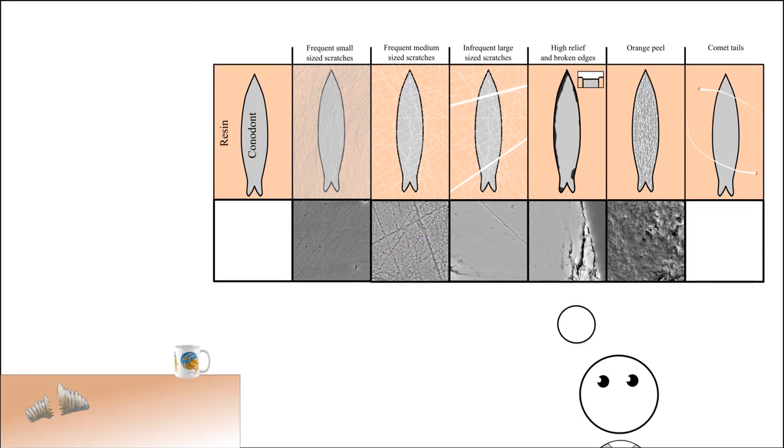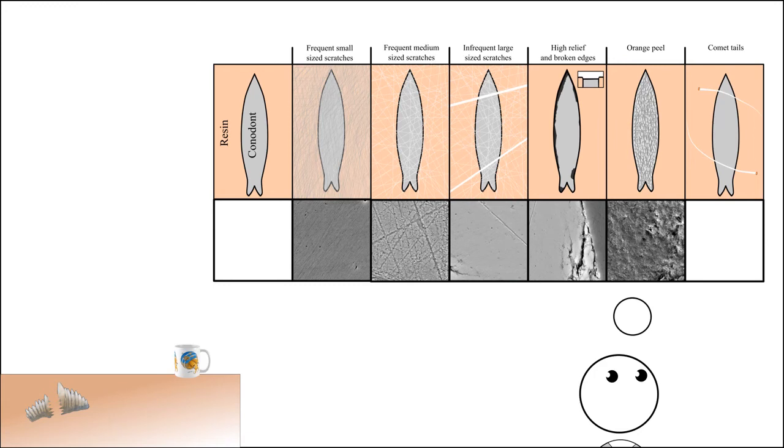High relief and broken edges is just caused by the difference in hardness between your resin and your sample. If you see that this is occurring you can apply just a little bit more pressure and this should allow both the resin and the sample to be polished away at the same speed. The orange peel texture is a high topography texture and this is caused either by over polishing or too much pressure. So if you see this you just pull that back a little bit and it should be removed.